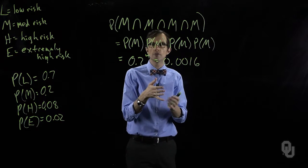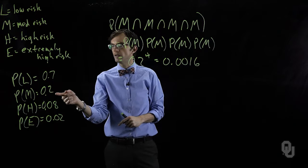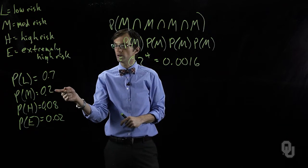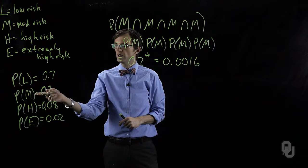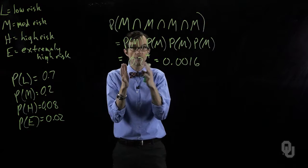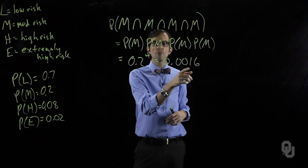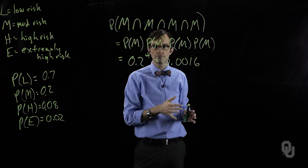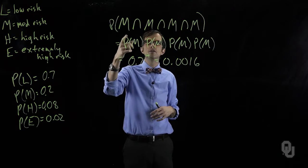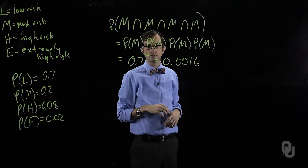That's a pretty low probability. Given that the probability of one particular project being medium risk is 0.2, having four together, that probability gets much, much smaller. That's the nature of intersections.